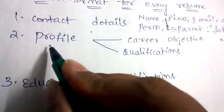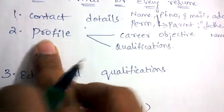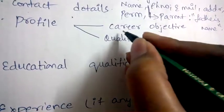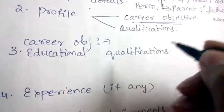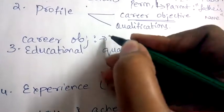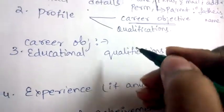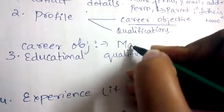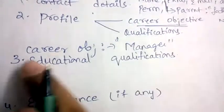Next, after contact details you need to mention your profile. Under profile, first mention your career objective. The career objective tells the employer what you would like to become — where you want yourself to be after five years — just to estimate your mindset. Mention your career objective such as 'I want to be a manager of the same company,' or any real-time goals you have.